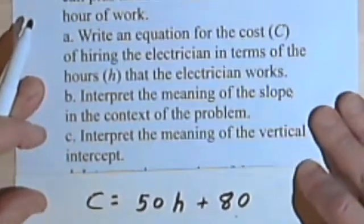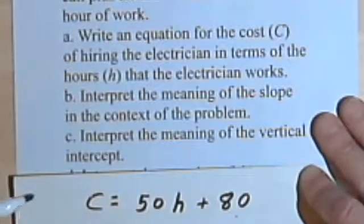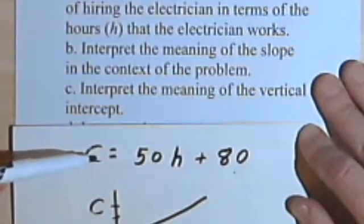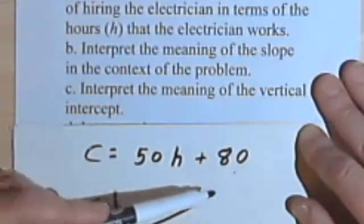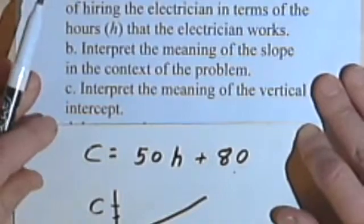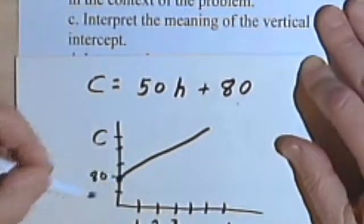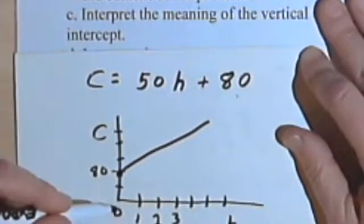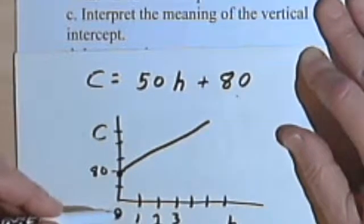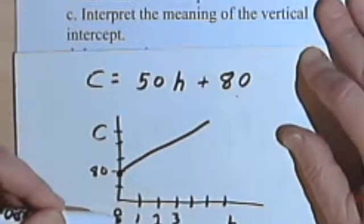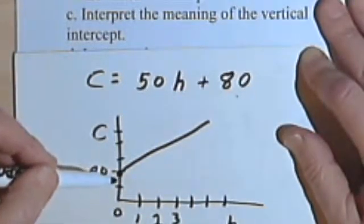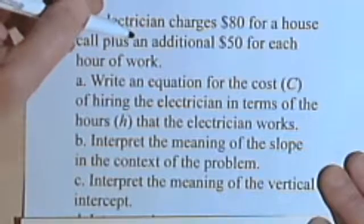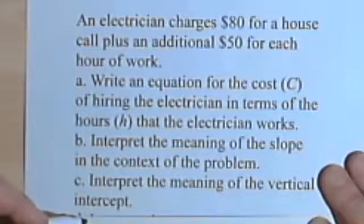Interpret the meaning of the vertical intercept. The vertical intercept is 80, since this is in slope-intercept form. But what does it mean? The vertical intercept occurs when the independent variable is zero — when no time has elapsed, before he has started to work, the charge is already $80. That's the house call fee. He charges $80 before he even starts working. That's the meaning of the vertical intercept.